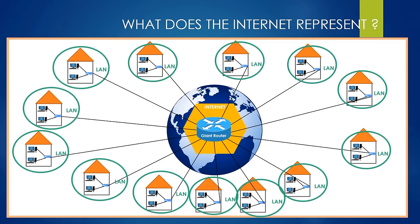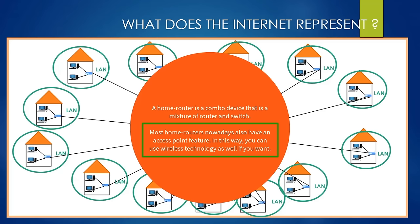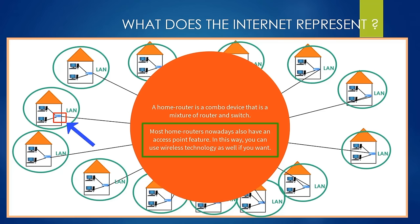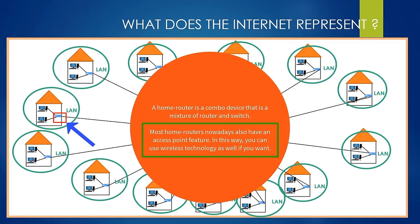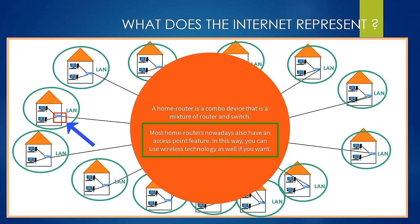This is where the home router comes into play. The home router is a combined device consisting of a router and switch combination. If we have a home router, we don't need an additional switch and router — this device is enough for small environments like a home or small office. I showed you the home router because most of you have these devices in your home and connect to the internet by using home routers.